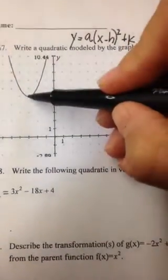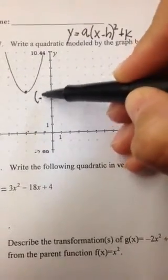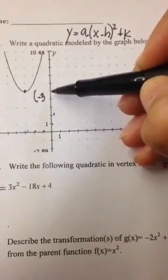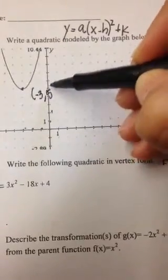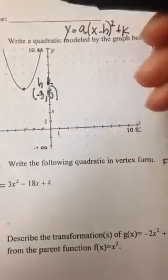So if my vertex is at negative 3, 5, we know h is negative 3 and k is 5.